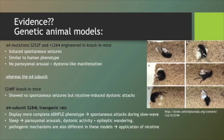The alpha 4 mutations S252F and L264 engineered in knockin mice induced spontaneous seizures of various types, in some cases similar to the human phenotype, but no paroxysmal arousal and dystonia-like manifestations. In comparison, the alpha 4 subunit S248F in knockin mice showed no spontaneous seizures but nicotine-induced dystonic attacks. Alpha 4 subunit S284L transgenic rats showed a more complete ADNFLE phenotype with spontaneous attacks during slow-wave sleep comprising paroxysmal arousals, frightened behaviour, dystonic activity, and epileptic wandering.